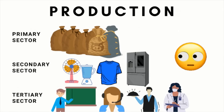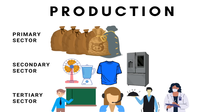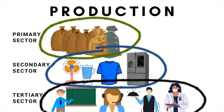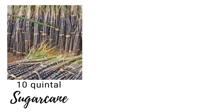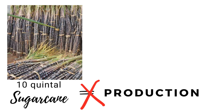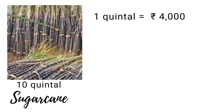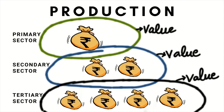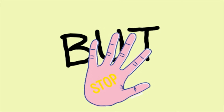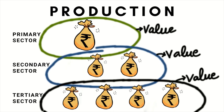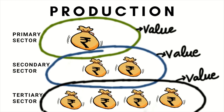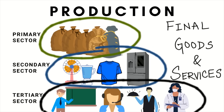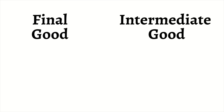Since counting production directly is complicated, economists measure it by value. They look at how much value of goods and services has been produced. For example, if we produced 10 quintals of sugarcane and one quintal is worth 4,000 rupees, then our total production value is 40,000 rupees. We measure the value produced in each sector this way. But there is a catch: we do not count all production value. We only add the value of final goods and services, not intermediate goods.